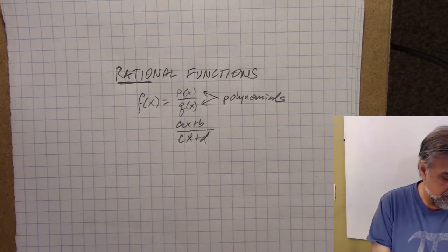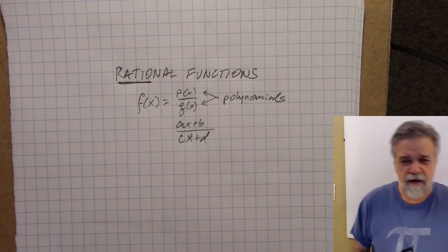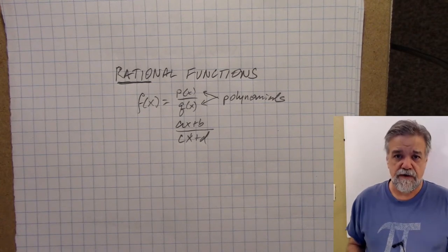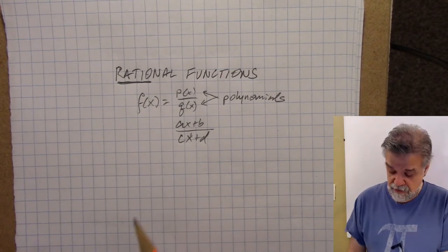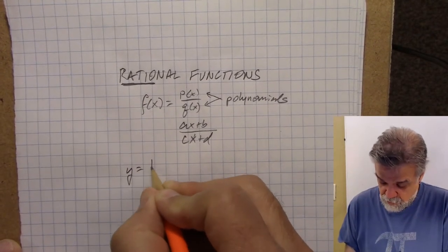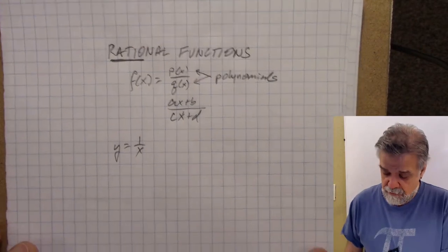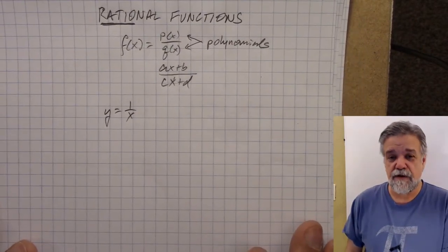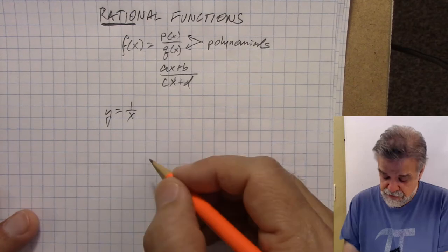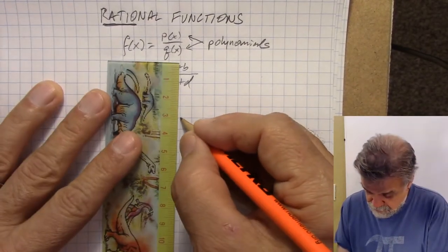To get started, we probably ought to look at the parent function of this kind of function, which is y equals 1 over x. I'll explain why that's the parent function in a few minutes, but first let's just look at that function and see what the graph looks like.